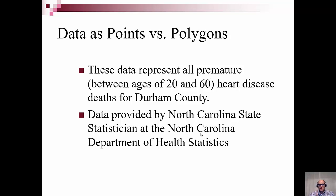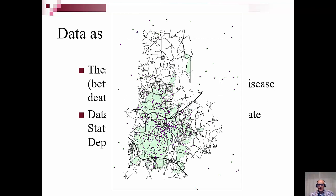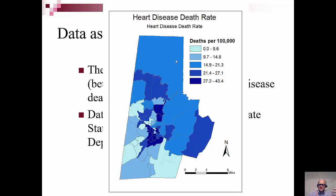Here's an example of a student project where a student wanted to map all premature heart disease deaths in Durham County and look for a relationship with fast food or something similar. We received data from the North Carolina State Statistician at the Department for Health Statistics and got a map that just looks like a bunch of dots. We can see where they're more concentrated and where they're less concentrated. We can group these by census block group or census tract, normalize them, and make a map where we look at the number of incidences divided by the population to get a rate.